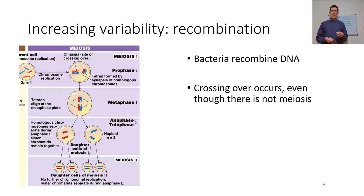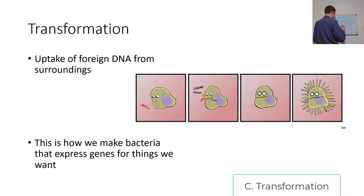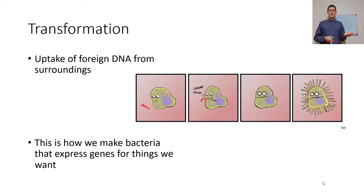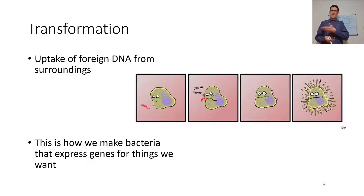There's also transformation — if there's loose DNA in the environment, bacteria will pick it up, just like the English language picks up words from other languages. It's an uptake of foreign DNA from the surroundings. This is actually how we make bacteria that express genes for things we want — we put a gene for producing insulin in the environment, the bacteria takes it up, and now you have an insulin-making bacterium, which we use to produce insulin for diabetics.